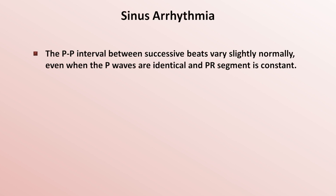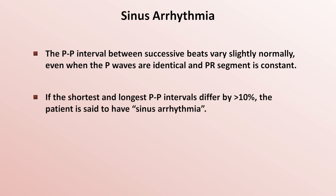First up is sinus arrhythmia. The p-to-p interval between successive beats normally varies slightly, even when the p-waves are identical and the PR segment is constant. However, if the shortest and longest p-p intervals differ by more than 10%, the patient is said to have sinus arrhythmia. I've seen a few different definitions out there, but this one seems to be the most common.